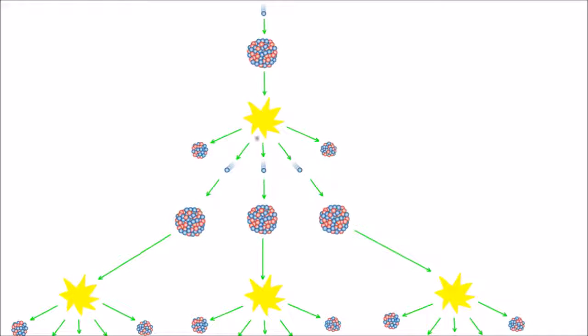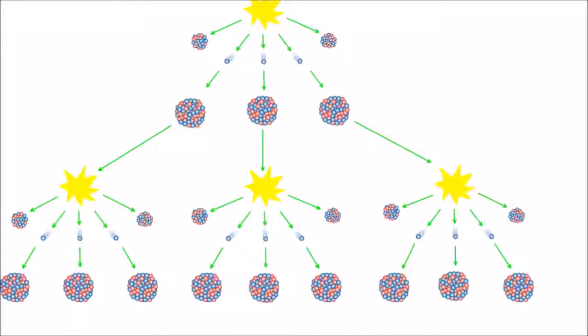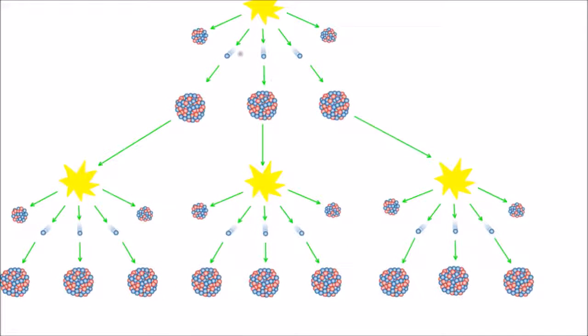Those three neutrons can then go and be absorbed by another three nuclei which will then again fission, releasing lots of energy and emitting more neutrons which will then go and be absorbed by more nuclei. So you can see here that this reaction is a chain reaction which gets larger and larger at each stage.